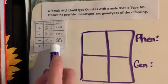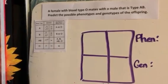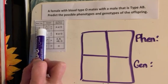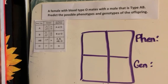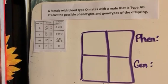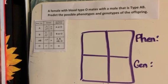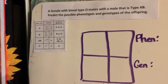Take a look at this chart. In order to get A blood, you can either get an A allele from one parent and a lowercase i (the recessive O) from the other — making you heterozygous A — or you could get A from both parents, making you homozygous dominant. B works the same way: you can inherit both B alleles, or just one B and one O recessive, and you'd still have blood type B because B is the dominant allele.